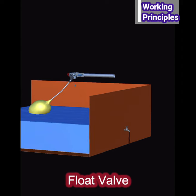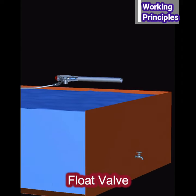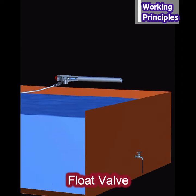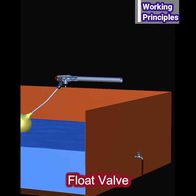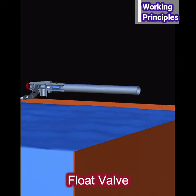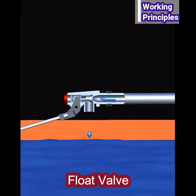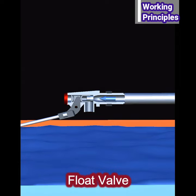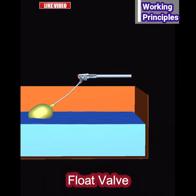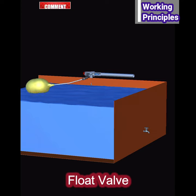When the water is released from the reserve, the float device drops, opening the valve. The valve will remain open until the float device is raised to a predetermined level by the rising water. The valve will then be closed and the water supply shuts off.